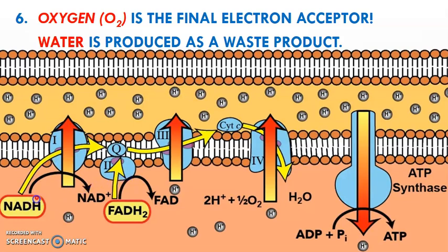When NADH donates its electrons, they pass from cytochrome to cytochrome. As they do, the electrons will attract hydrogen ions — usually a pair at a time — and pull them up into the intermembrane space. For NADH, that happens three times — it has three chances to pull up a pair of hydrogen ions. That's going to be important later on.